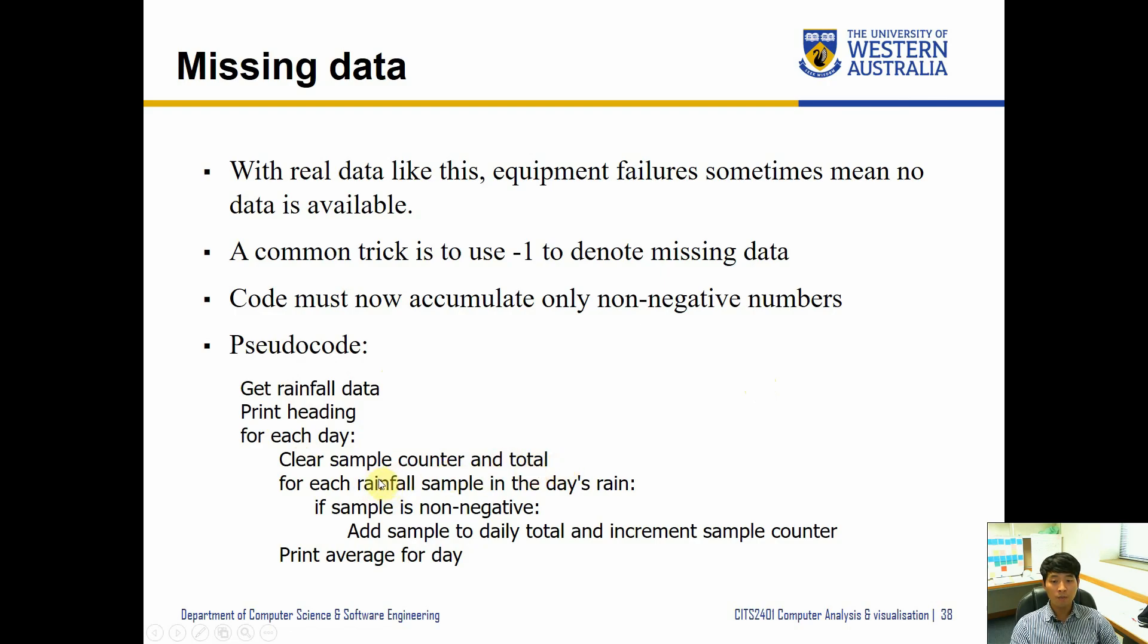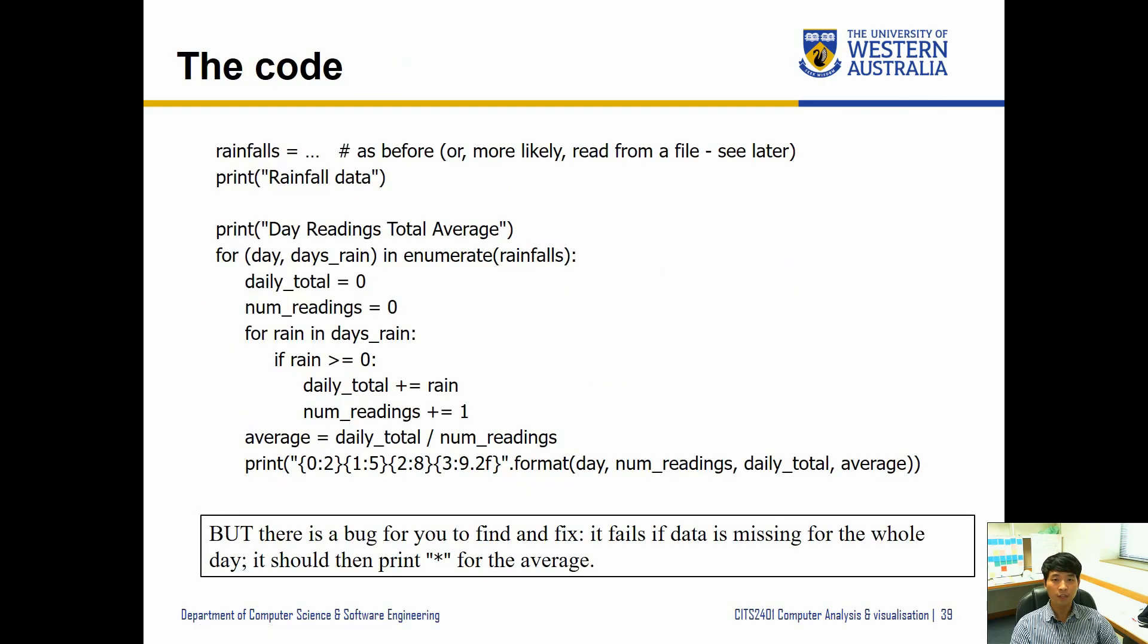For each rainfall sample in the day's rain, if the sample is non-negative, this means it was a correct reading. It's going to add the daily total and increment the sample counter. Otherwise it's not going to do anything with the data. And then we can calculate the average for the day. So let's give it a go.